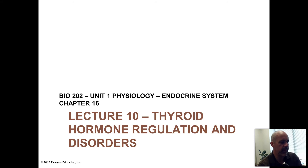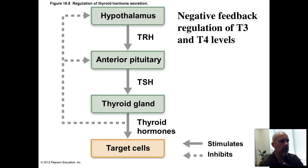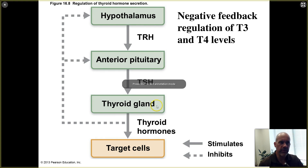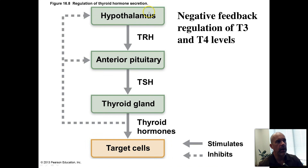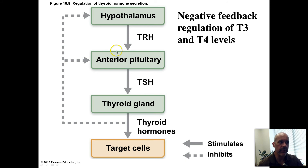Continuing on with more about the thyroid. We've seen this already when we did the anterior pituitary hormones. The hypothalamus makes a hormone called thyrotropin-releasing hormone, or TRH, which travels to the anterior pituitary. That signals cells in the anterior pituitary to secrete thyroid-stimulating hormone, or thyrotropin.